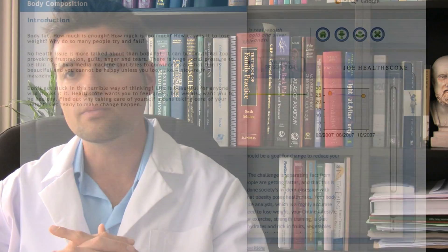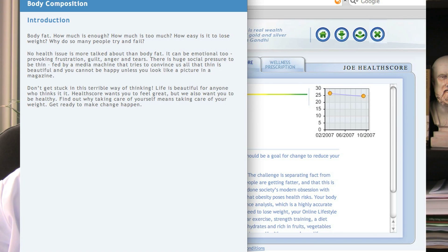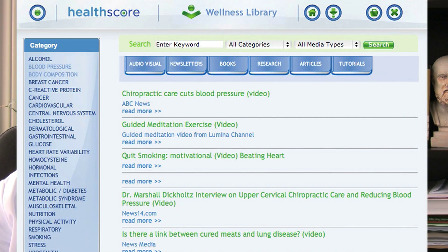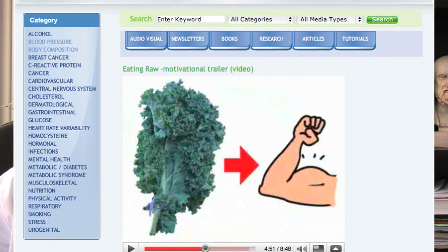What can you do about it? The first step is to get informed. There is a health tutorial on body composition included in your Healthscore report. You can access this either in the Healthscore results section of your online medical folder, or in the tutorial section of your wellness library.